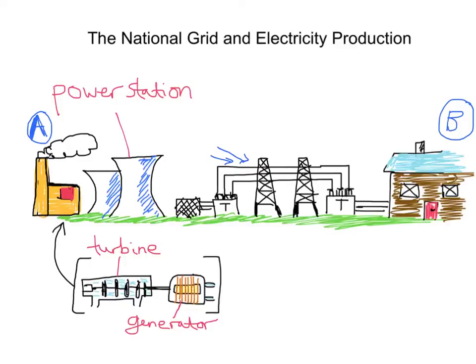What we use are things called transformers. A transformer is a device designed to increase or decrease the voltage of an alternating current supply — basically changing a high voltage supply into a low voltage one, or vice versa. A transformer that increases the voltage is called a step-up transformer, and one that decreases the voltage is called a step-down transformer.